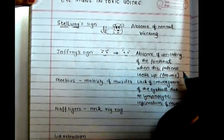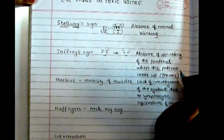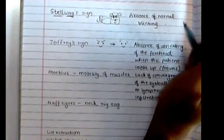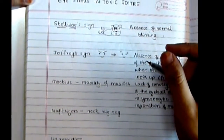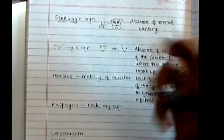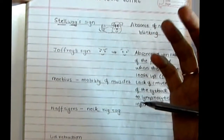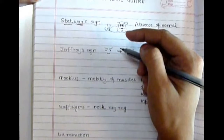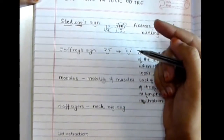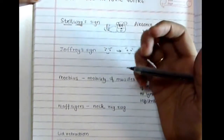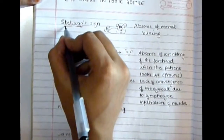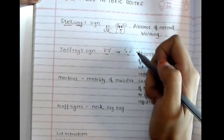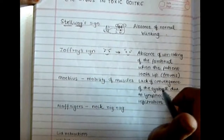The first sign is the Stellwag sign, which is the absence of normal blinking — the eyelids don't move or blink as much as they should, giving the patient a staring look. I think of a dog's tail wagging: constant movement. If the tail is not moving, it's still — so 'still-wag' sign means absence of movement of the eyelids.